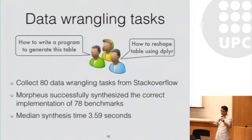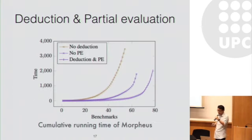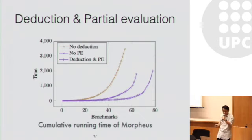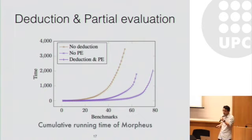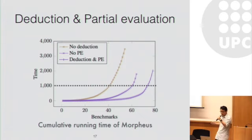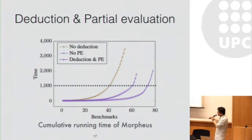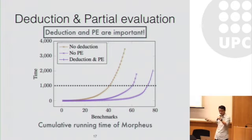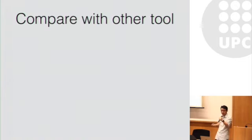This shows that we can actually use Morpheus to automate real-world data wrangling tasks. Second, to evaluate the effect of deduction and partial evaluation, we use the following figure showing the accumulated running time of Morpheus under different settings — essentially, how many benchmarks can we solve within a certain time limit. If you restrict time to 1000 seconds, the baseline without any partial evaluation or SMT deduction can only solve around 40 benchmarks. With SMT deduction but without partial evaluation, the system can solve around 60 benchmarks. Morpheus achieves the best performance by combining both SMT-based deduction and partial evaluation together.